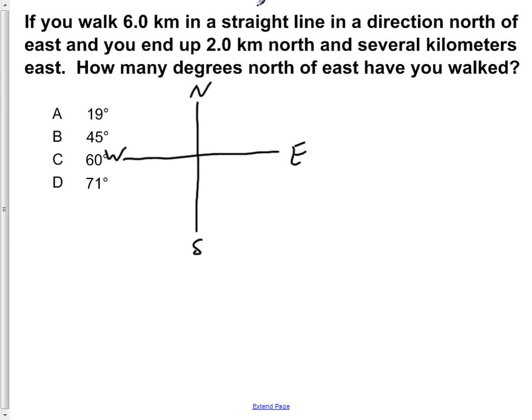and south. Now we're told that we walk six kilometers in a straight line in a direction north of east. So say we walk like this, this is our six kilometers here.